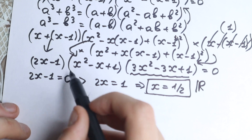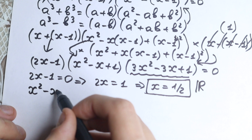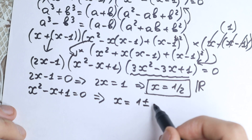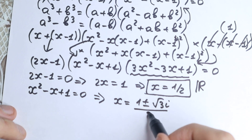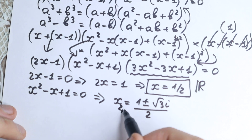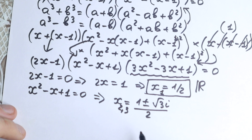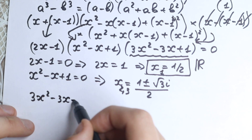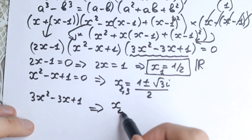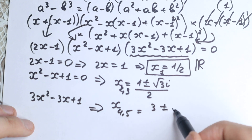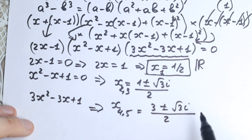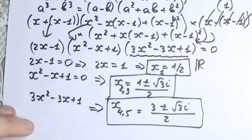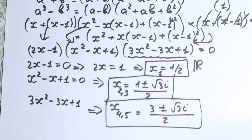From x squared minus x plus 1 equals 0, we get complex roots: x equals (1 plus or minus square root of 3 times i) over 2. These are our second and third roots. From 3x squared minus 3x plus 1 equals 0, we get the fourth and fifth roots: x equals (3 plus or minus square root of 3 times i) over 2. So we have one real root and four complex roots in total.